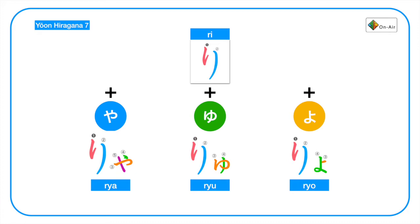Next, we have ri plus ya, yu, yo. So remember the R in Japanese is in between R and L. So again, we have rya, ryu, ryo. Rya, ryu, ryo.